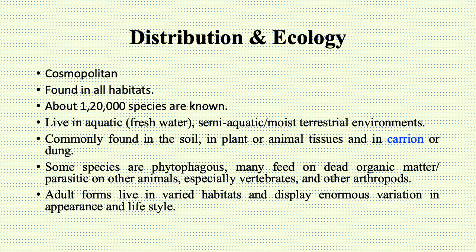Dipterans are cosmopolitan in distribution and found in almost all habitats. About 1,20,000 species are grouped into two suborders: Nematocera and Brachycera.